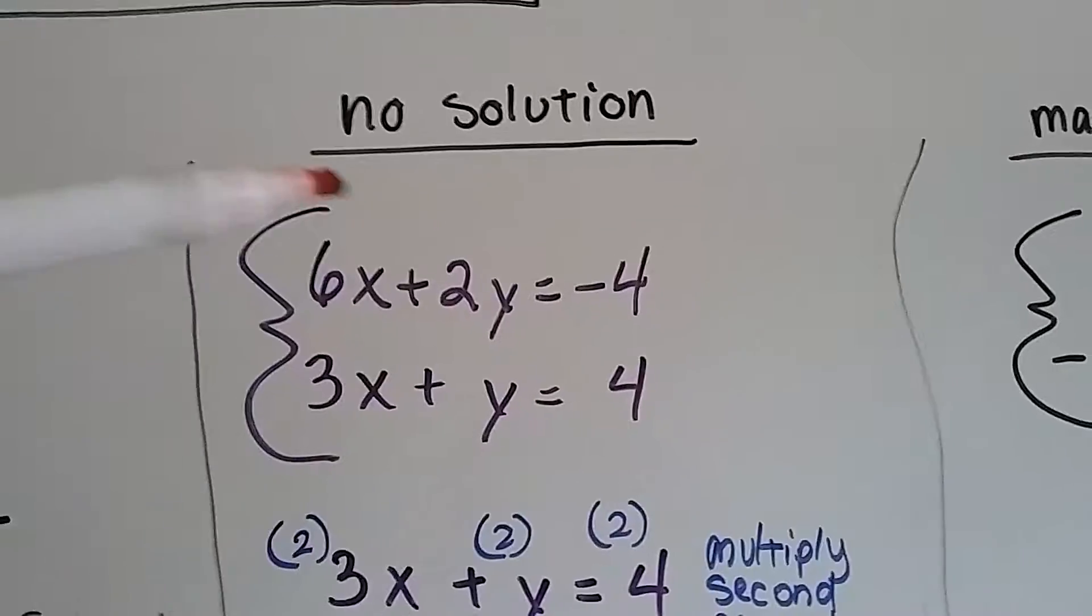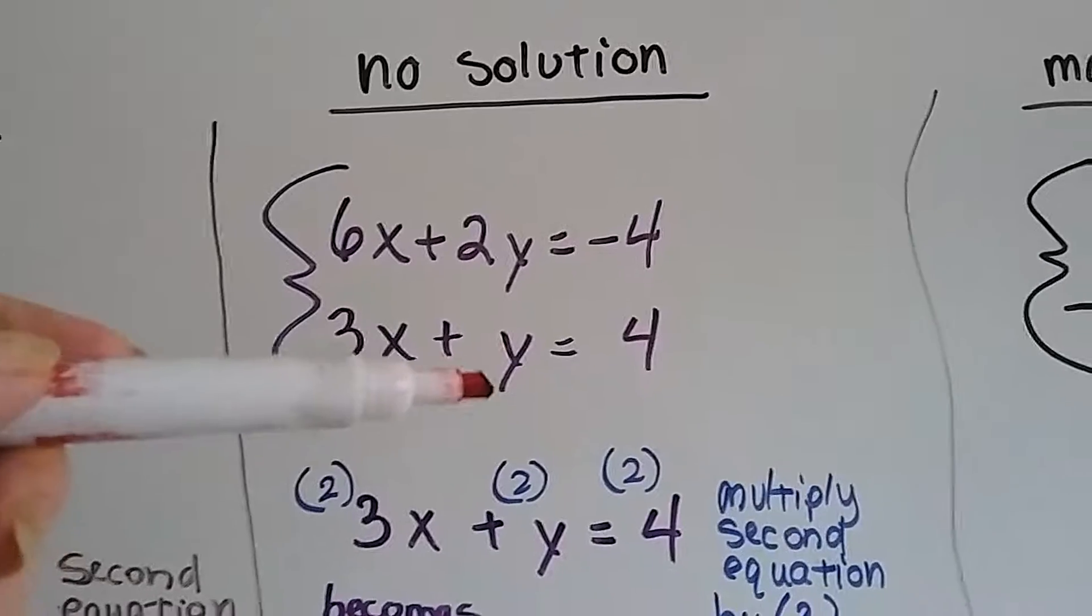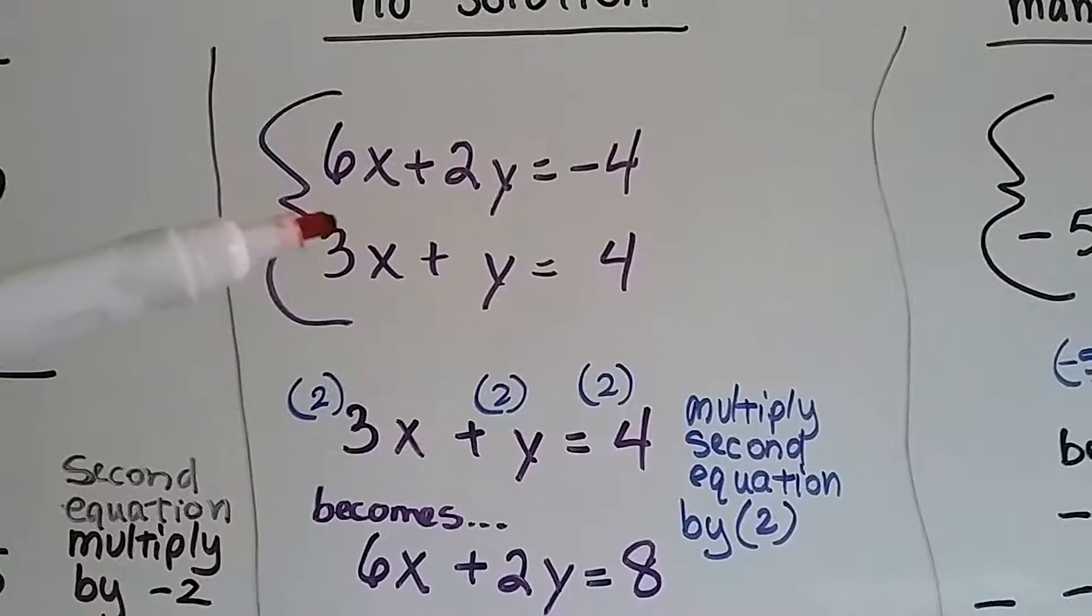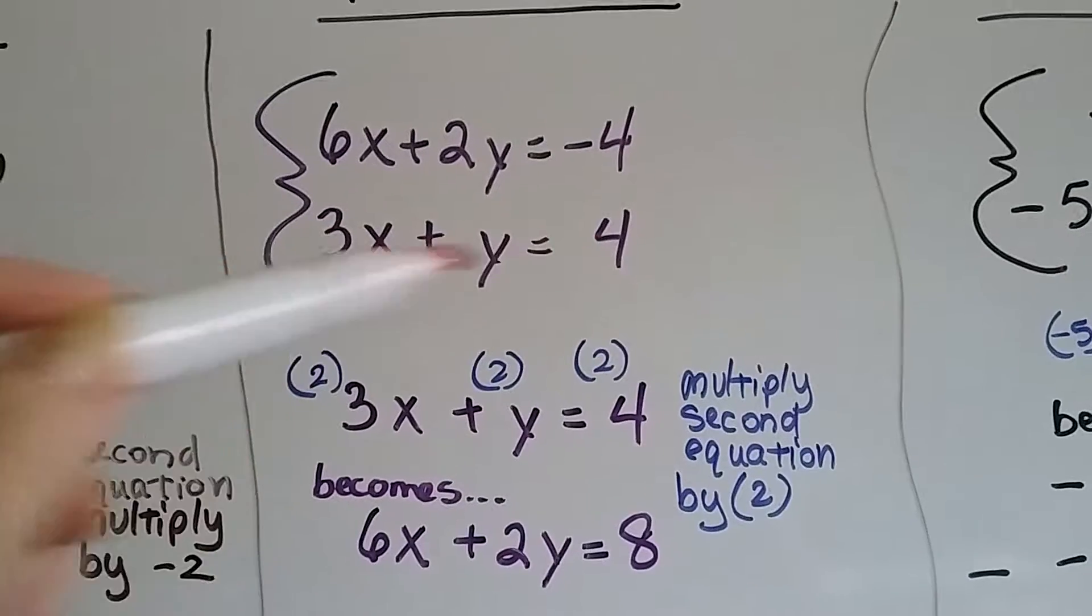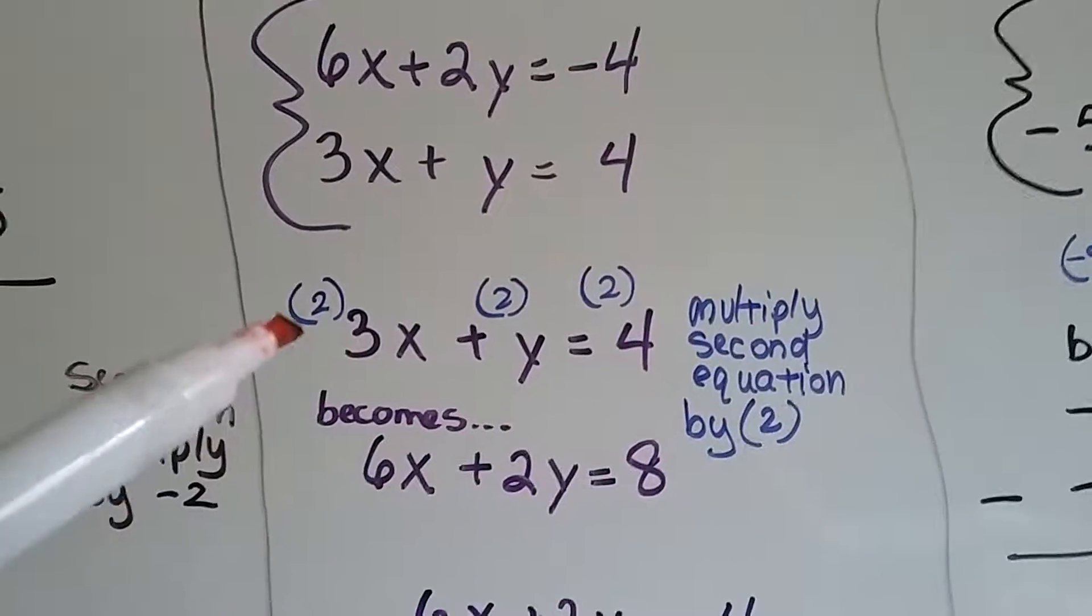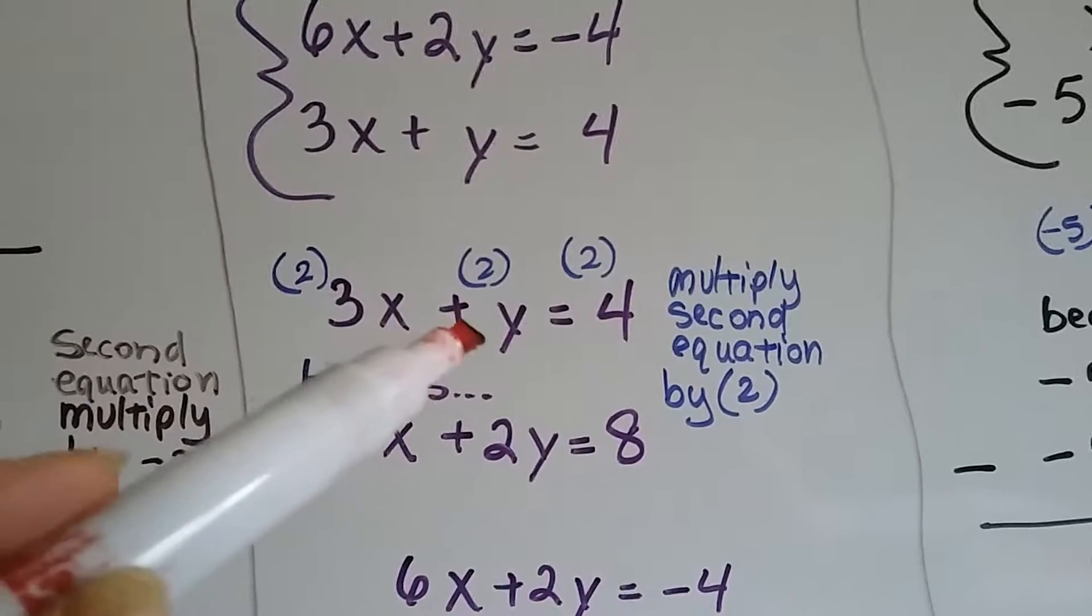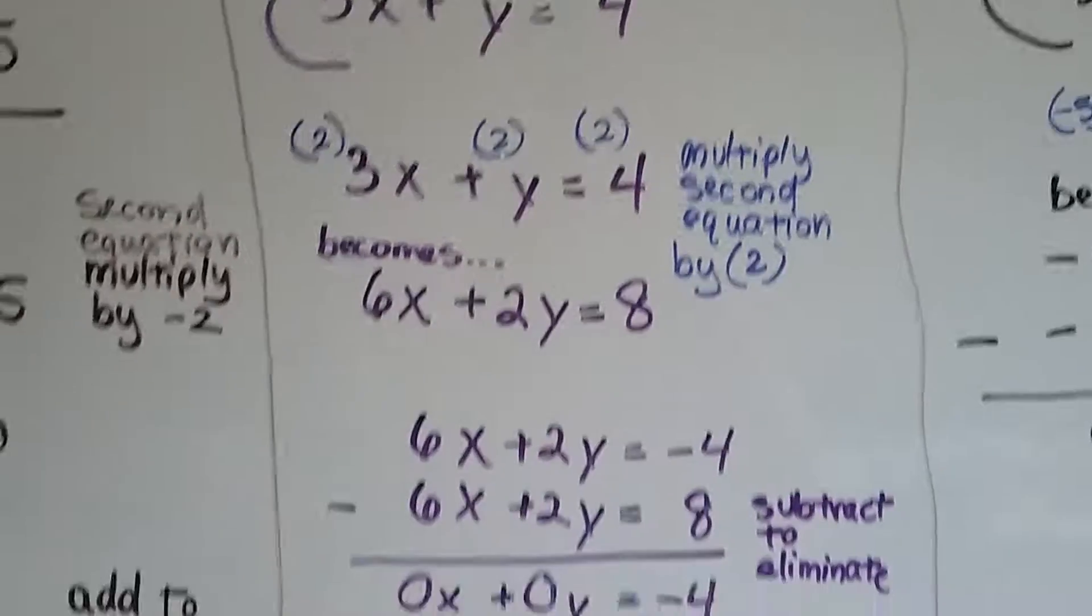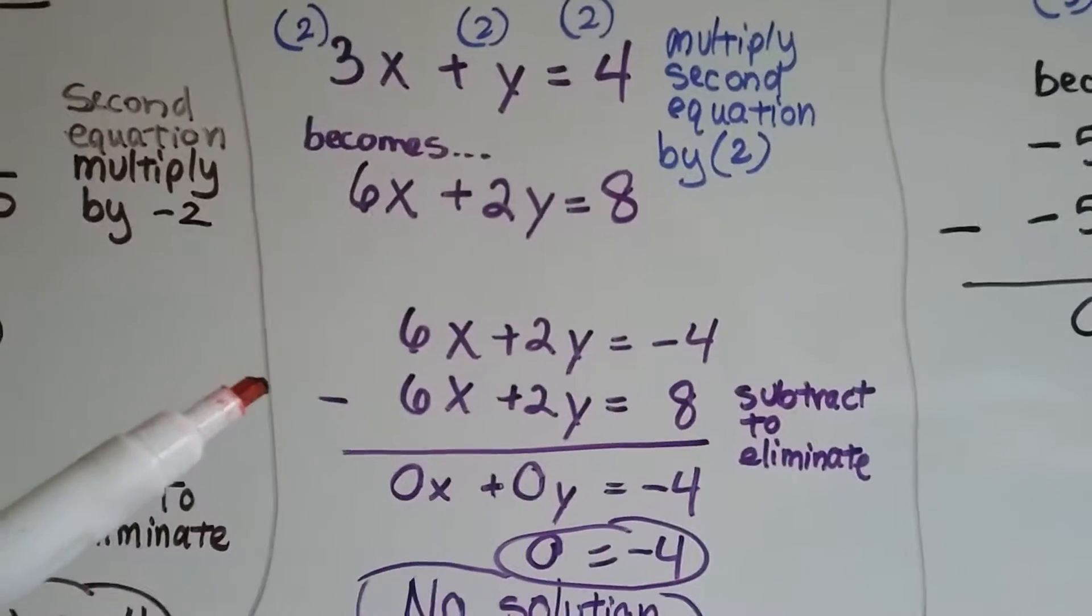Now this is the no solution. Here's our system of linear equations. I'm going to multiply the second equation by 2 to make it match the 2y. 3x times 2 is 6x, y times 2 is 2y, and 4 times 2 is 8. Now we can subtract to eliminate.